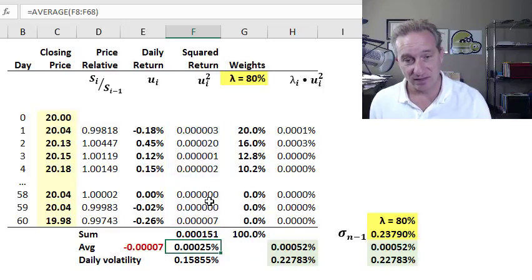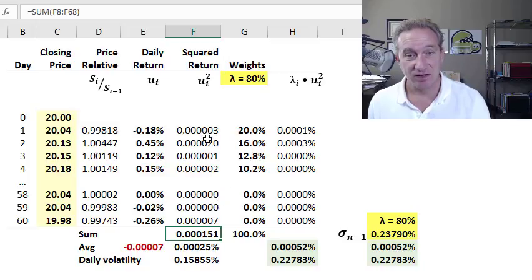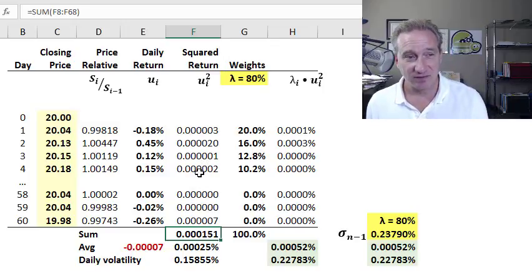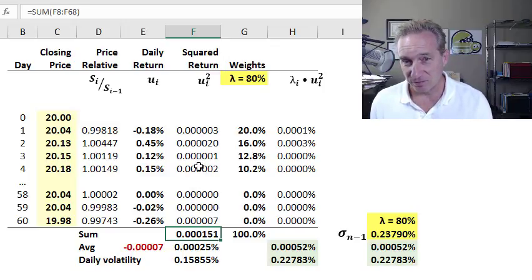However, the weakness and the common criticism of this historical standard deviation approach to estimating volatility is that implicitly all of the daily returns in the series are getting the same weight. So we could say this is an equally weighted approach, or we could say it's an unweighted approach.